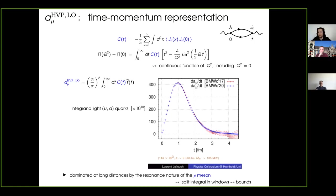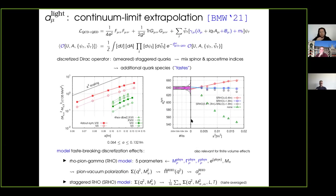This shows the huge progress that the BMW collaboration made between their earliest results in 2017 and the new result in reducing the error at large distances, which has a huge impact on the overall accuracy they can reach. Currently it is all systematics-dominated. They managed to significantly reduce the error in order to be systematics-dominated. At some point around four fermis, one can stop and use bounds coming from the fact that the correlation function has to be positive and smaller than the two-pion contribution, to estimate the tail. This is also crucial for the final error.